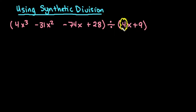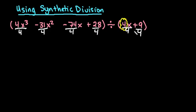Because we have a 4 in front, if we were doing long division we'd really be dividing by 4 rather than 1. That's why a lot of people just use long division for a problem like this — you have to divide every single term by 4 to get a leading coefficient of 1, because synthetic division only works with a leading coefficient of 1. So you'll have to deal with fractions.